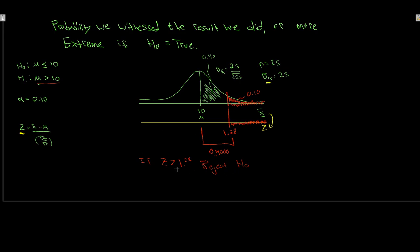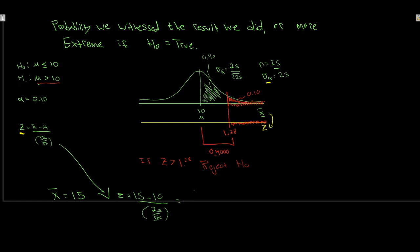Let's suppose we now conduct our sample of size 25, and we work out from this some value of x-bar. This value of x-bar is going to be, let's say, 15. We get an x-bar of 15. Step five, we're going to figure out the corresponding z value for that. z is 15 minus 10, all over my standard error — 25 all over root 25 — giving me 5 all over 5, so I get 1 as my z statistic.